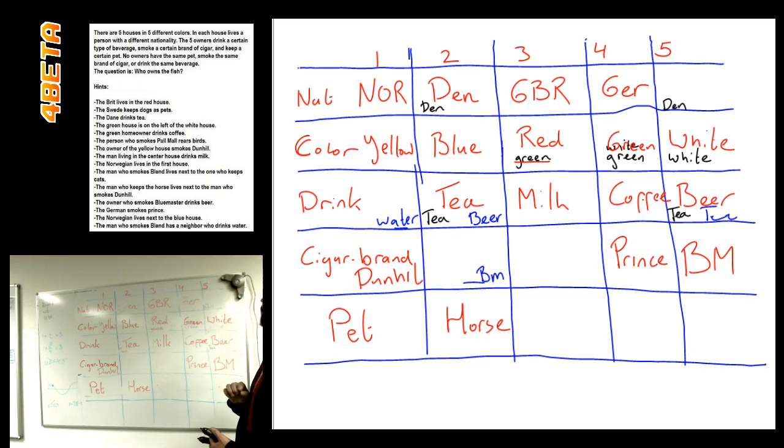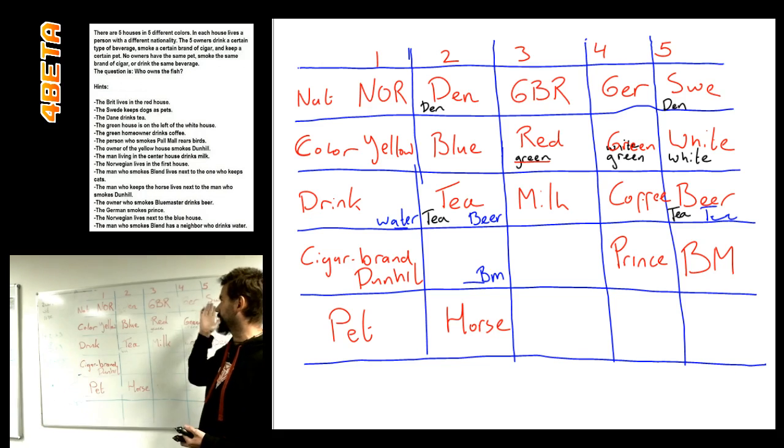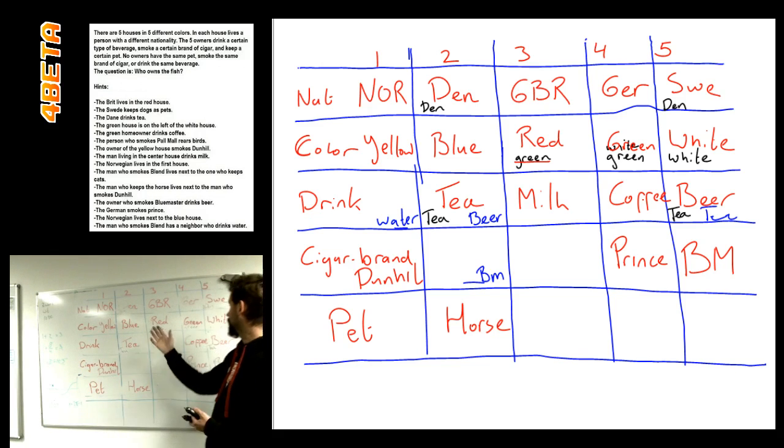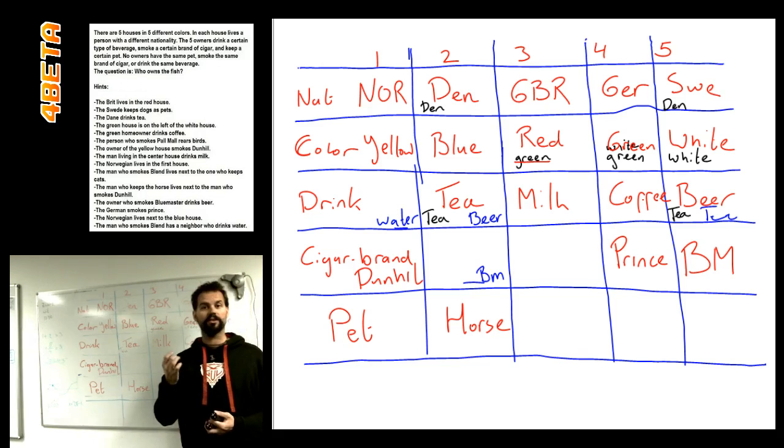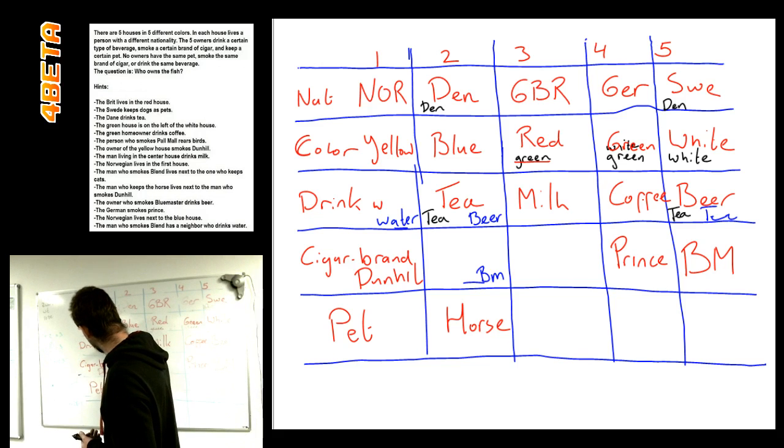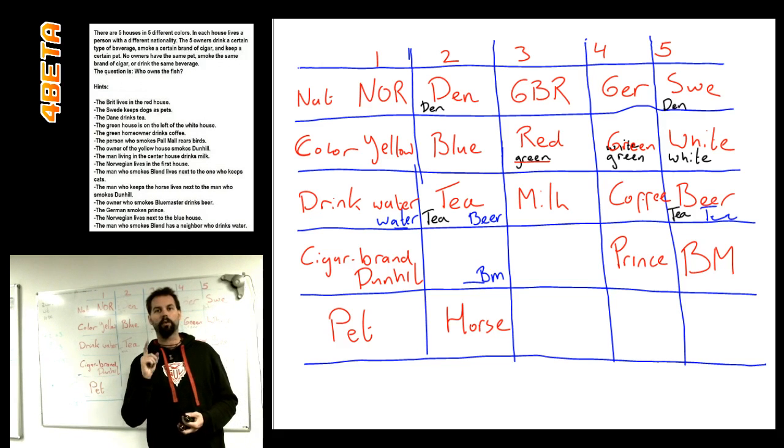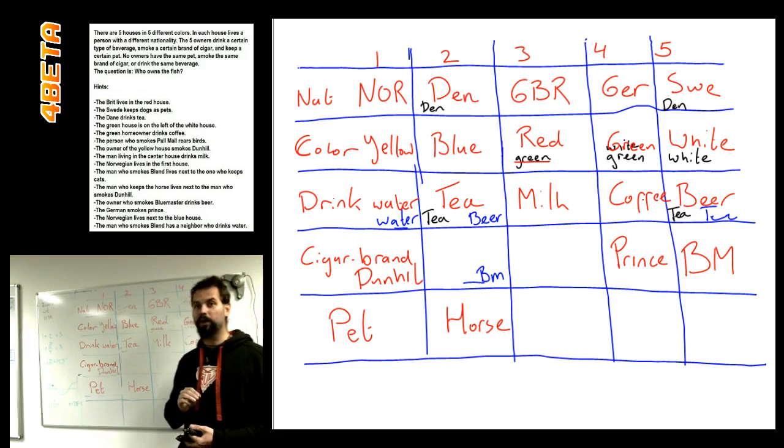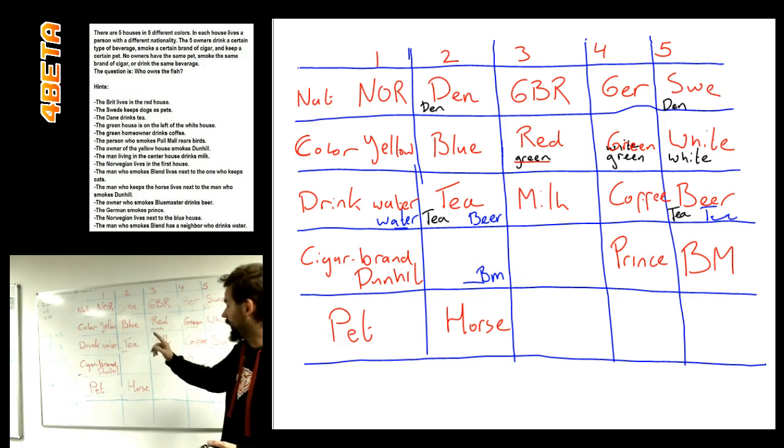Okay. In house number five, we get the Swede. We get him by default because all the other nationalities are taken. We have all the colors, so that leaves us the drink, which is water in house number one. And we have water in house number one. Okay. Easy.